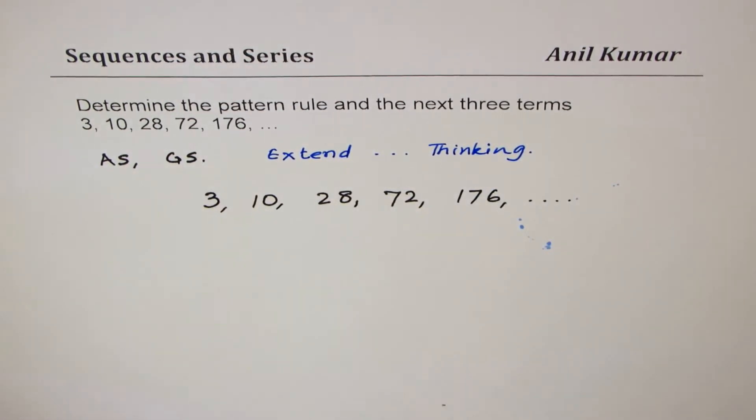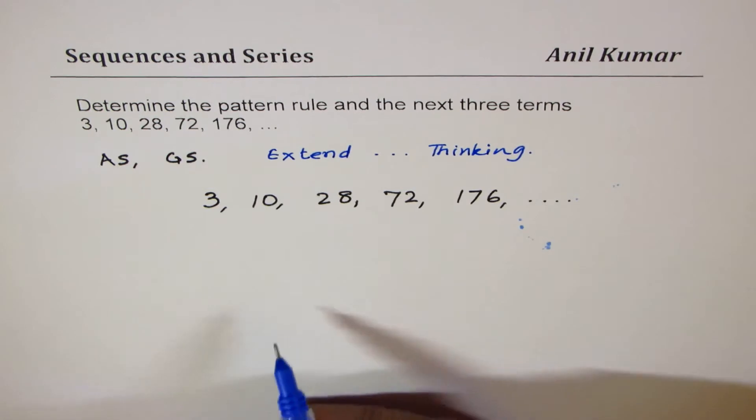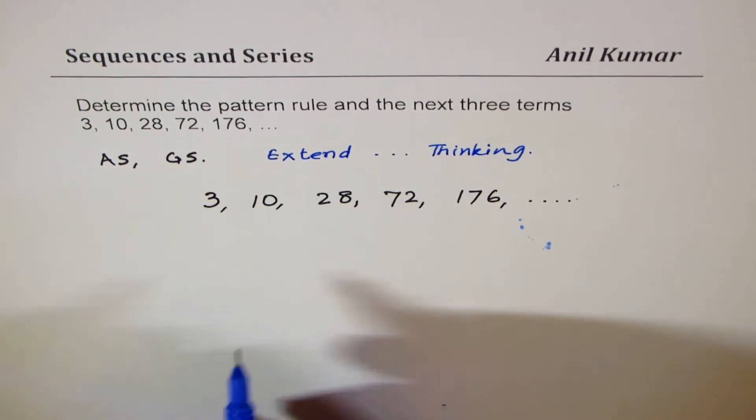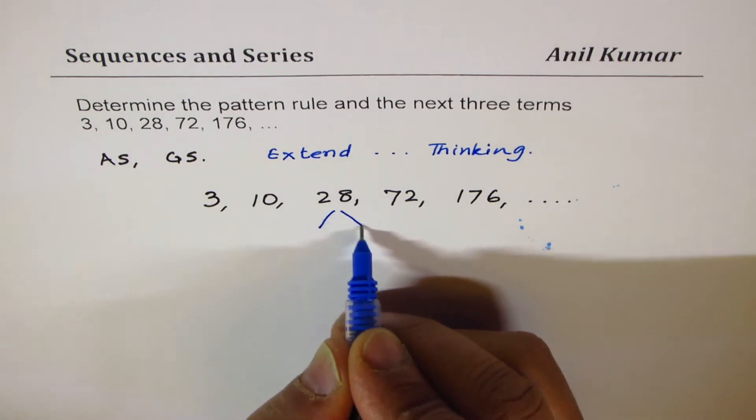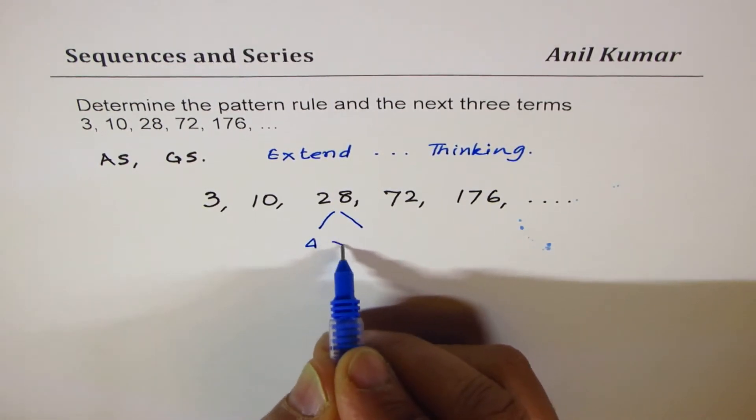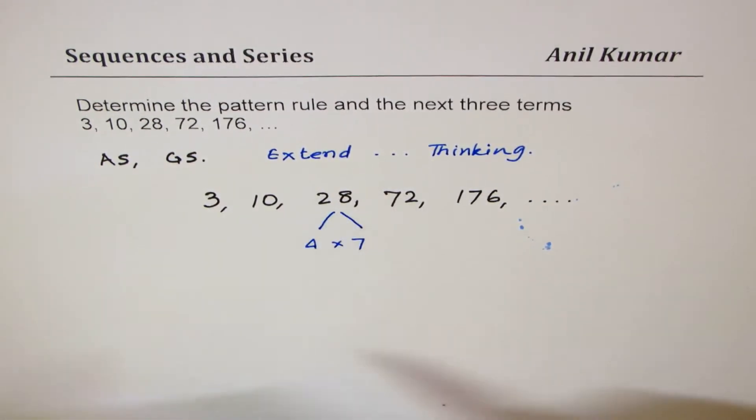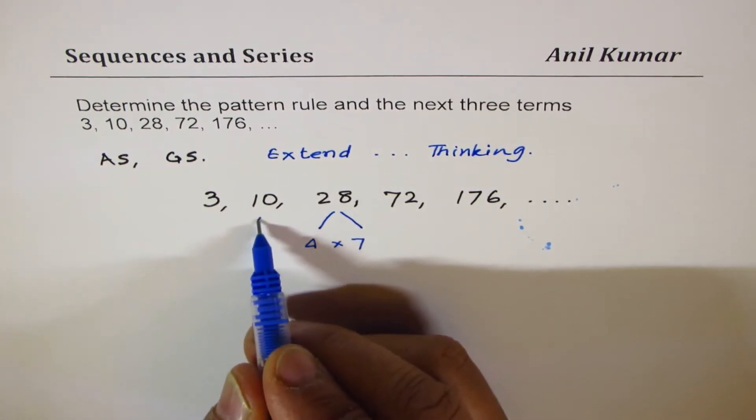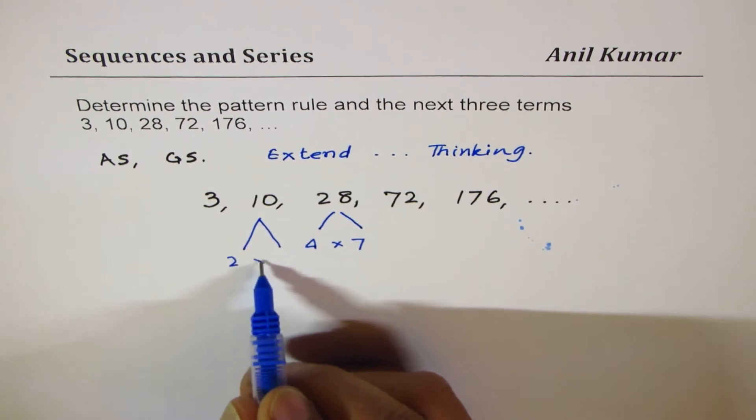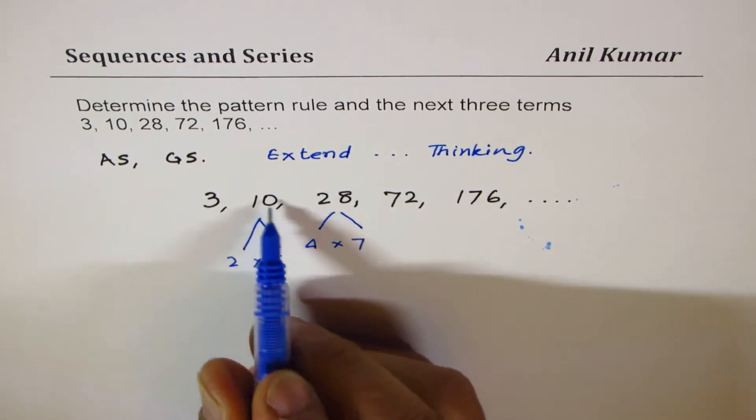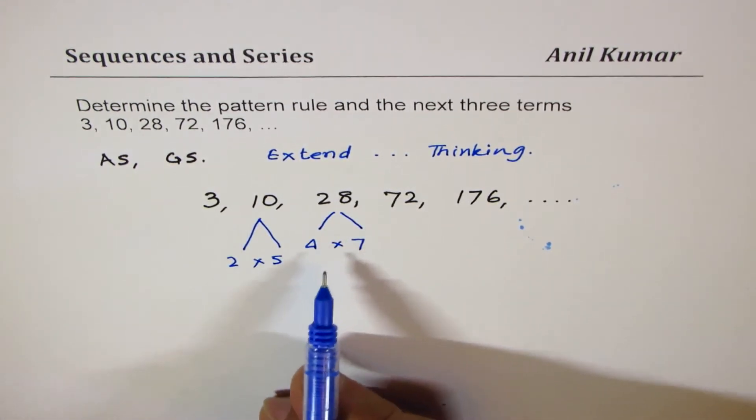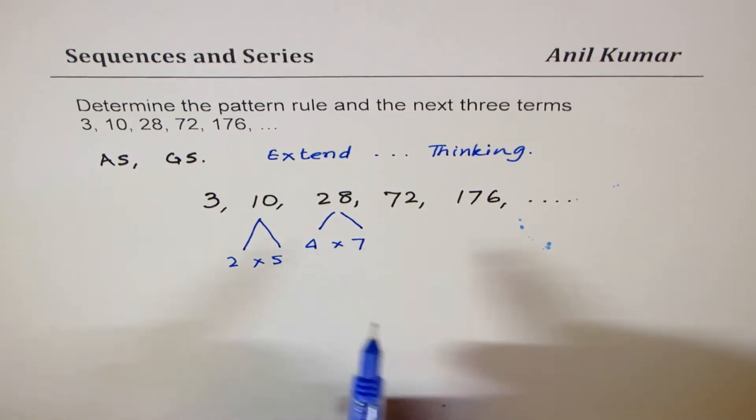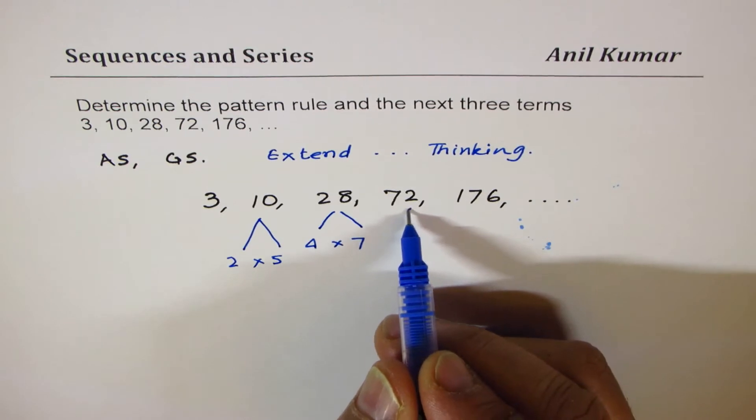Now, let us see how to split these terms and then get something. When I get 28, I could write this as 4 times 7. 4 times 7 is 28. And as far as 10 is concerned, we do see 10 is 2 times 5. Seeing these numbers kind of give you 2 times 5, 4 times 7.